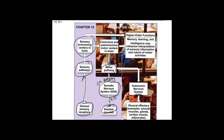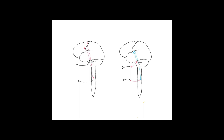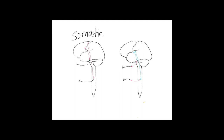Those motor pathways go to skeletal muscle, but there are many more effectors in the body — visceral effectors like smooth muscles, glands, cardiac muscle, and adipocytes. Those are the effectors that the autonomic nervous system sends commands to. So we're going to compare the somatic motor system with the autonomic motor system. Both are sending out commands.